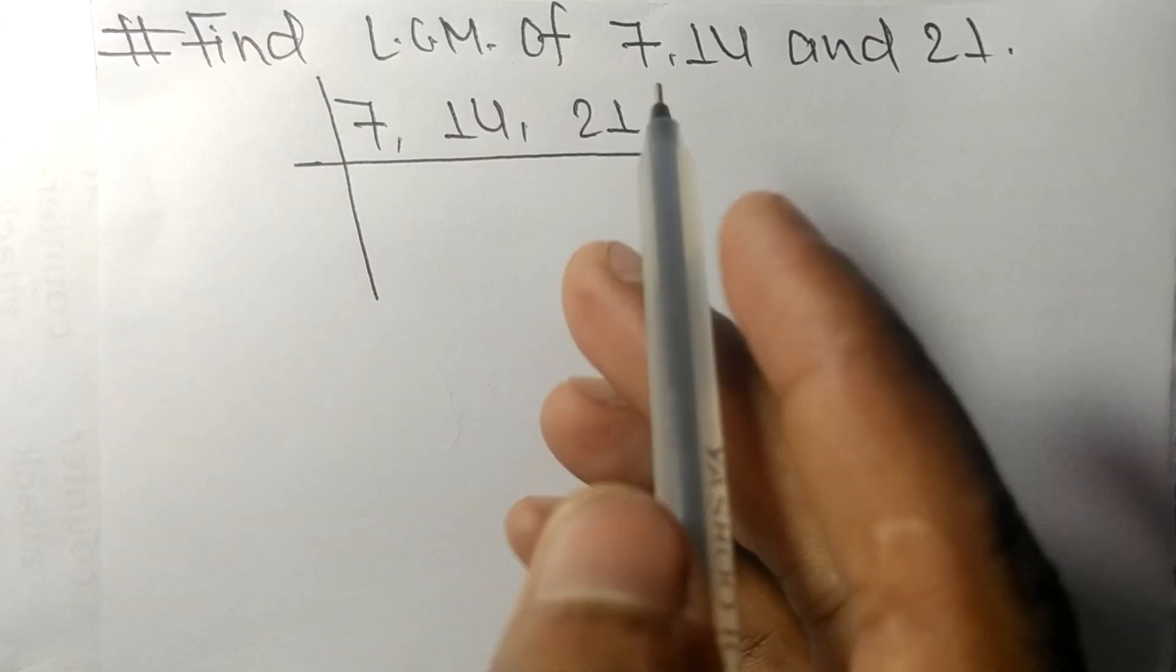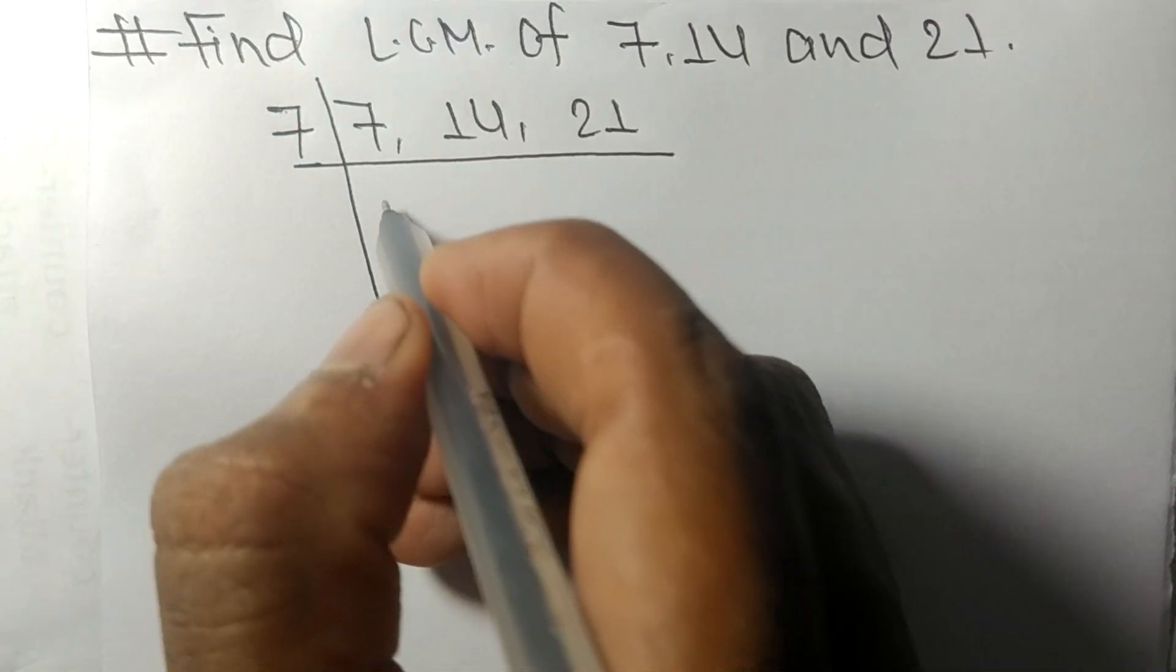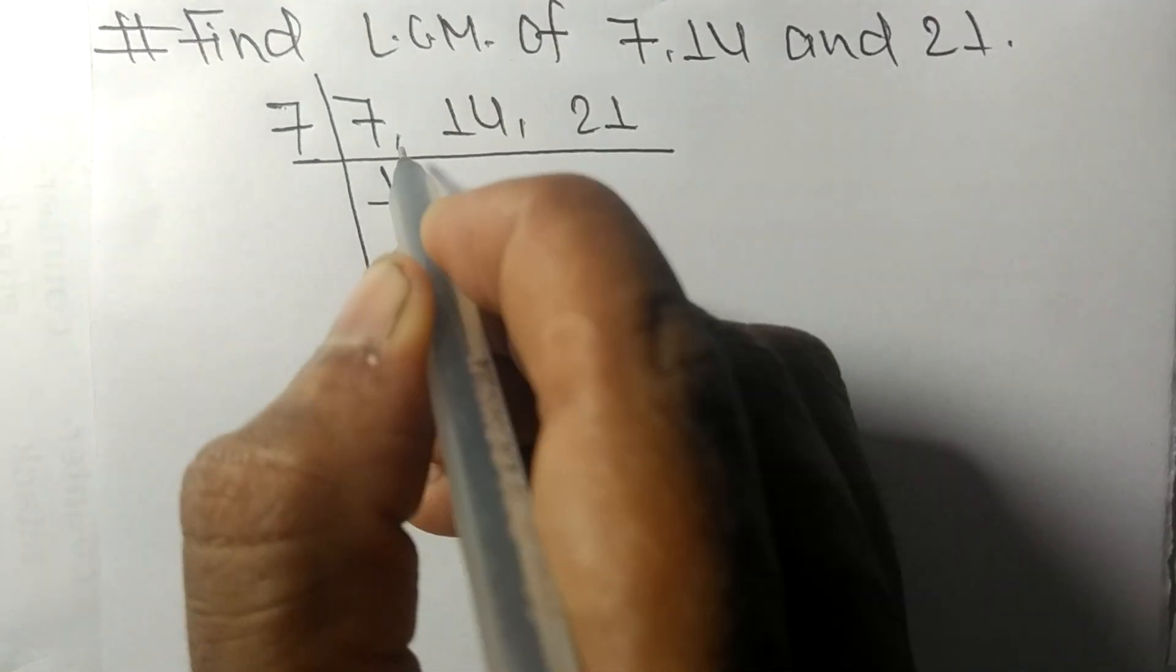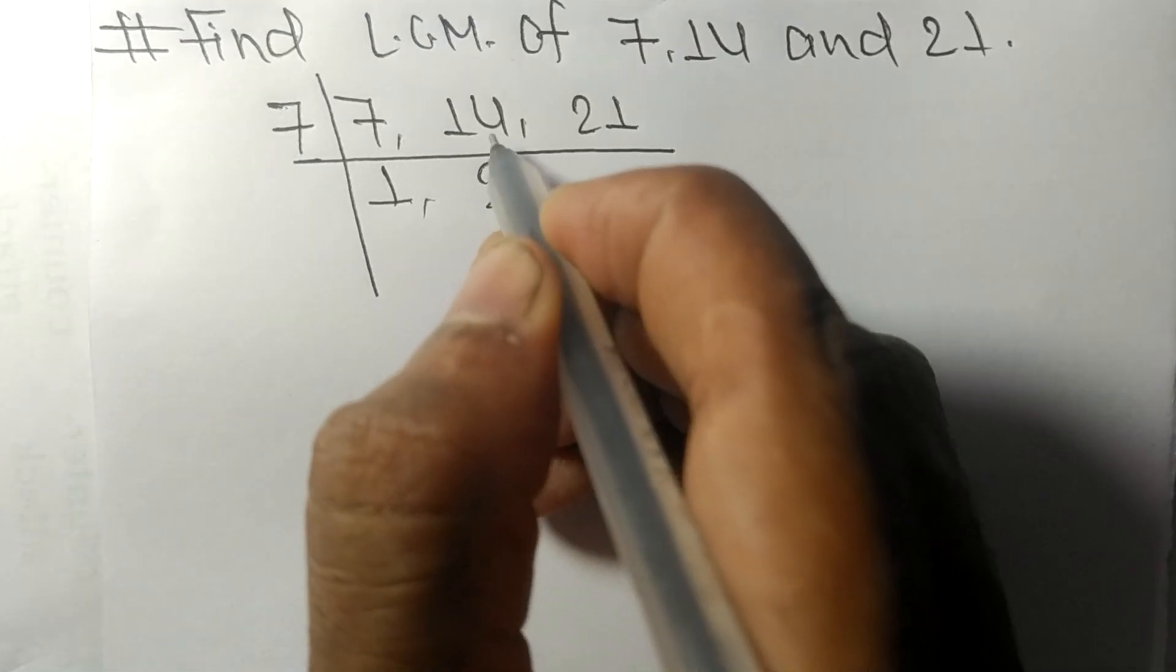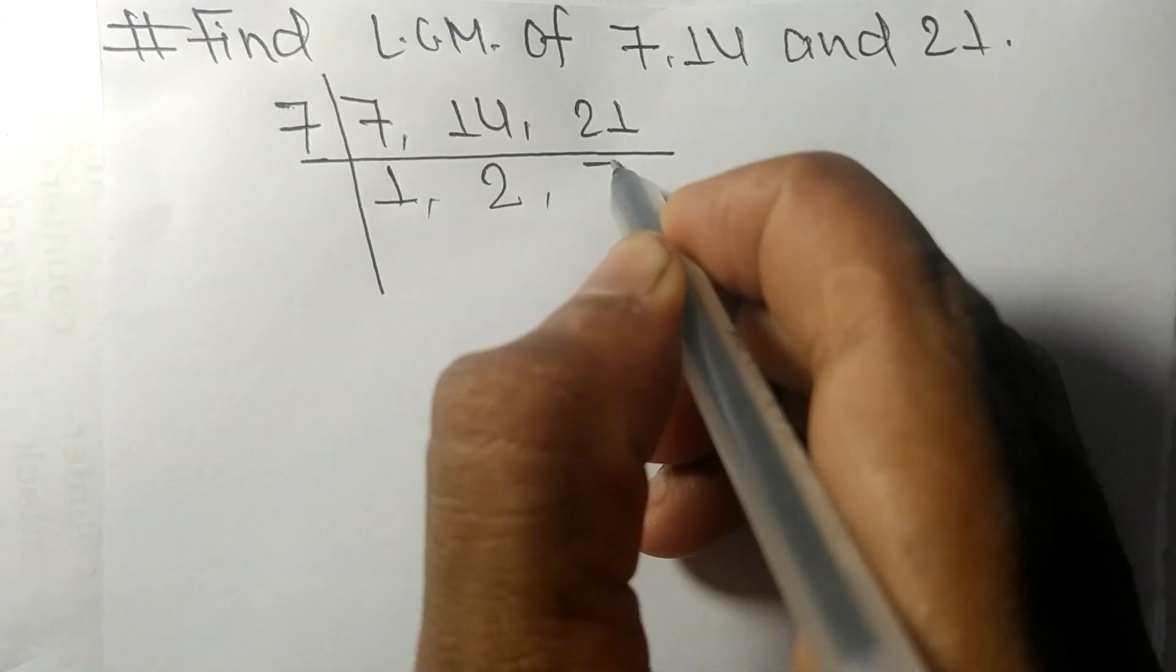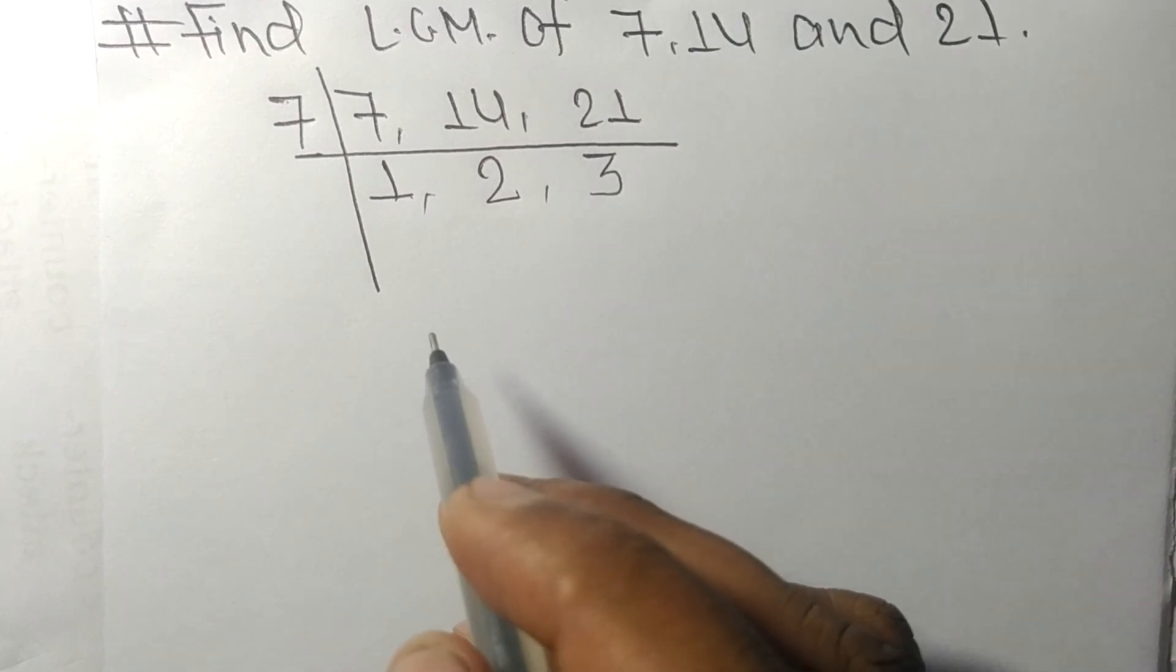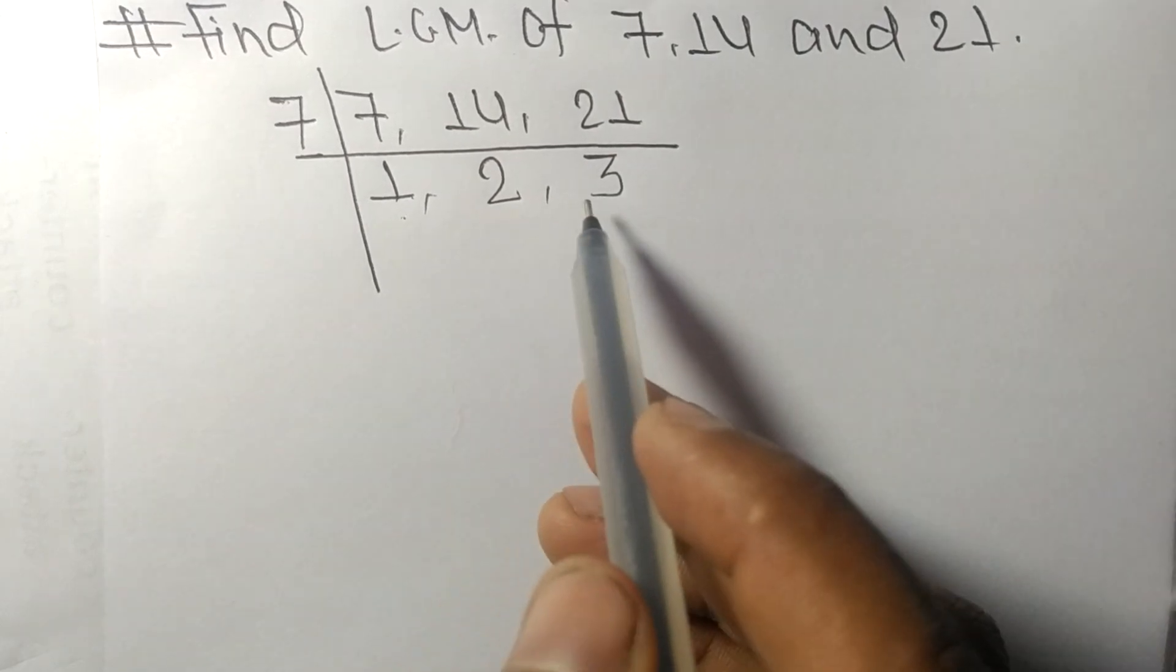These all numbers are divisible by 7: 7 times 1 means 7, 7 times 2 means 14, 7 times 3 means 21. So now we got 1, 2, and 3.